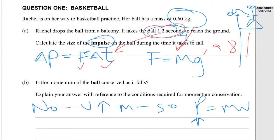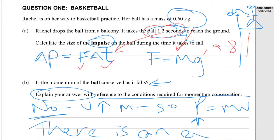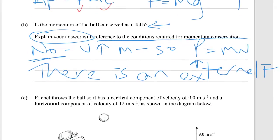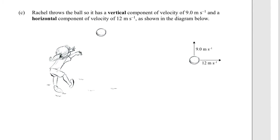You need to not just say no, which is the answer to the first part here. The second part, you have to explain your answer. You explain it with reference to conditions required for momentum conservation. And the answer there is that there is an external force acting, which is gravity. There is an external force. Momentum is conserved if there are no external forces or torques acting on the system.